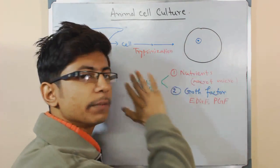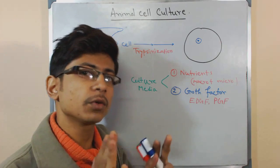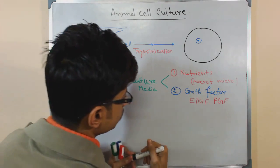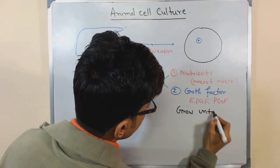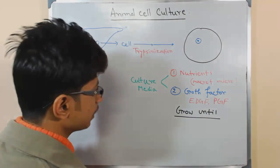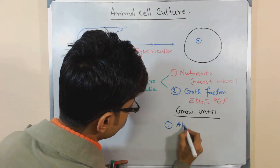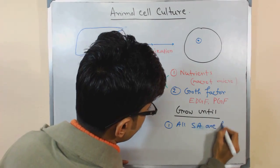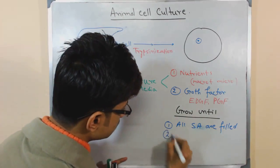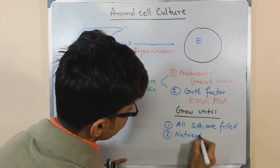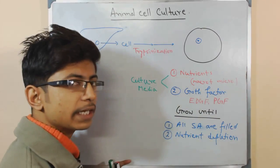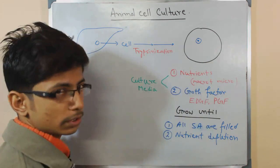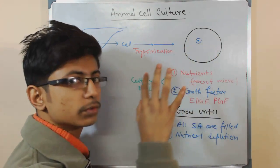Once the surface area is completely filled with cells, growth will be stopped — halted and blocked. Growth ceases when either all the surface area is filled with cells, or nutrient depletion occurs. Once either of these conditions is reached, cell growth is halted.